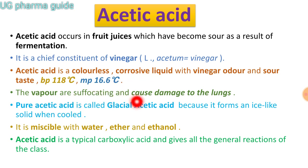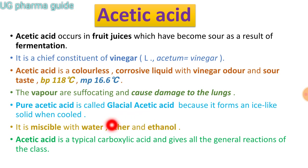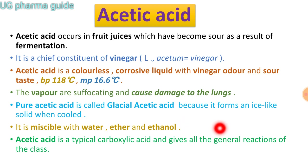The vapors are suffocating and cause damage to the lung. Pure acetic acid is called glacial acetic acid, because it forms an ice-like solid when cooled. It is miscible with water, ether, and ethanol. Acetic acid is a typical carboxylic acid and gives all the general reactions of the class.